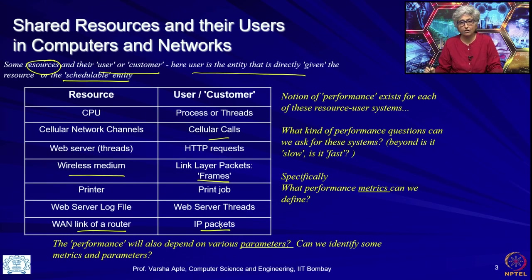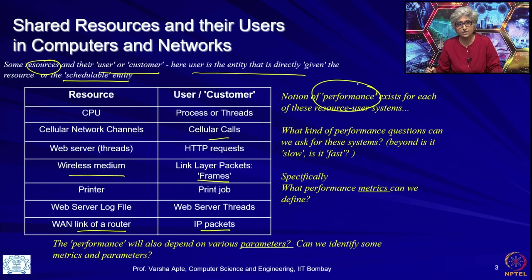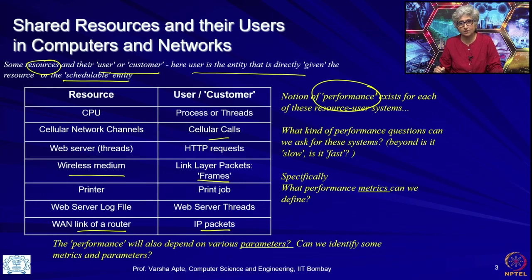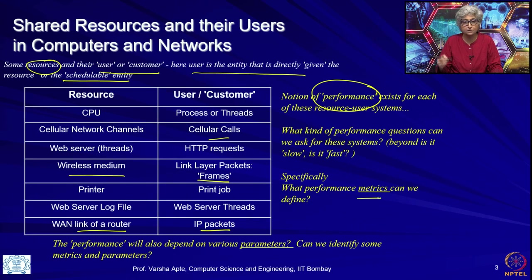We left off discussing that performance, as we defined it in the last lecture, is basically how well something functions given that it is functioning. We left off asking: can we be a little more specific — can we say something more about these resources and users, other than just saying it is slow or it is fast?